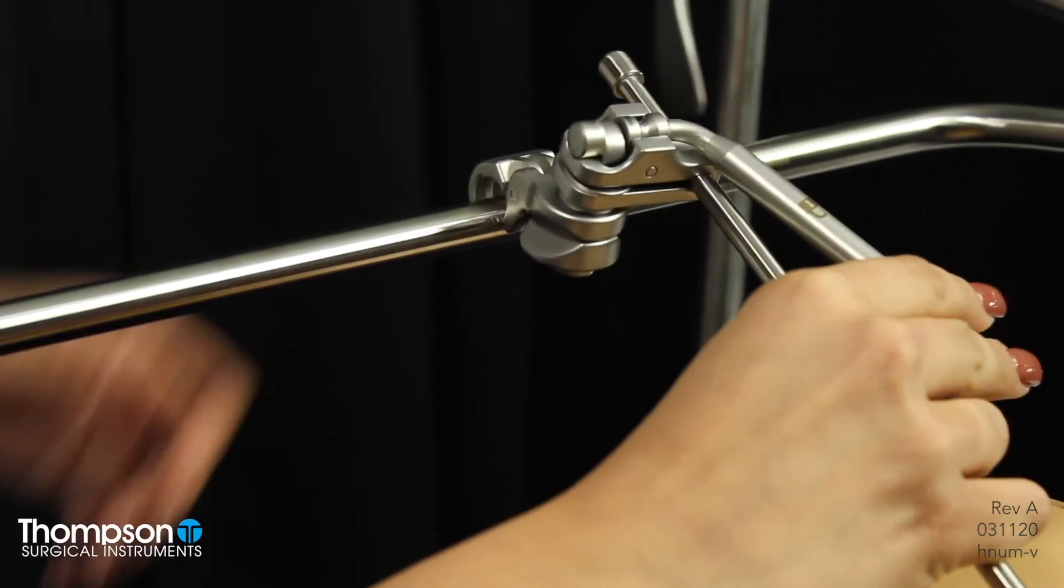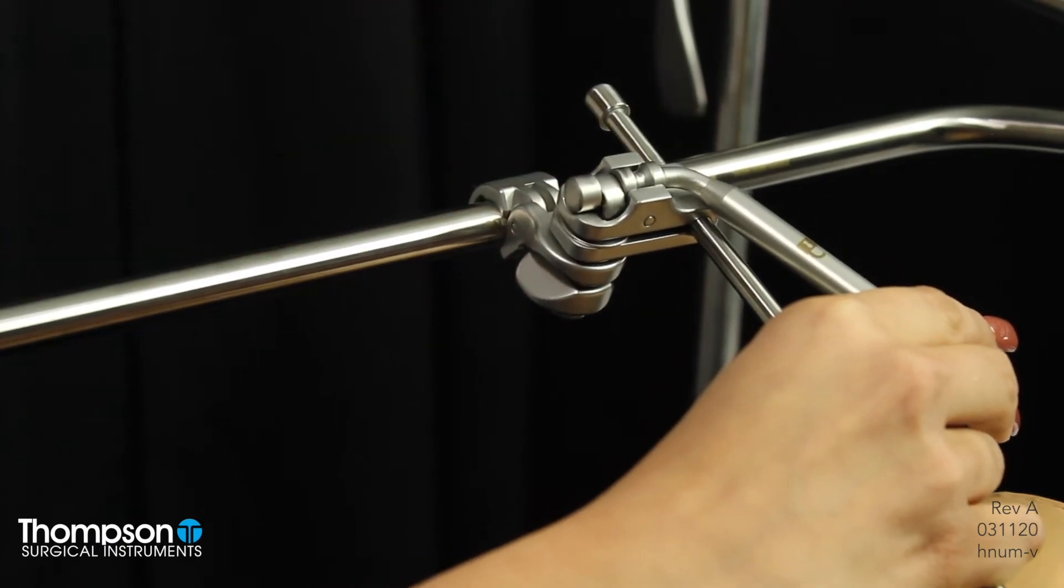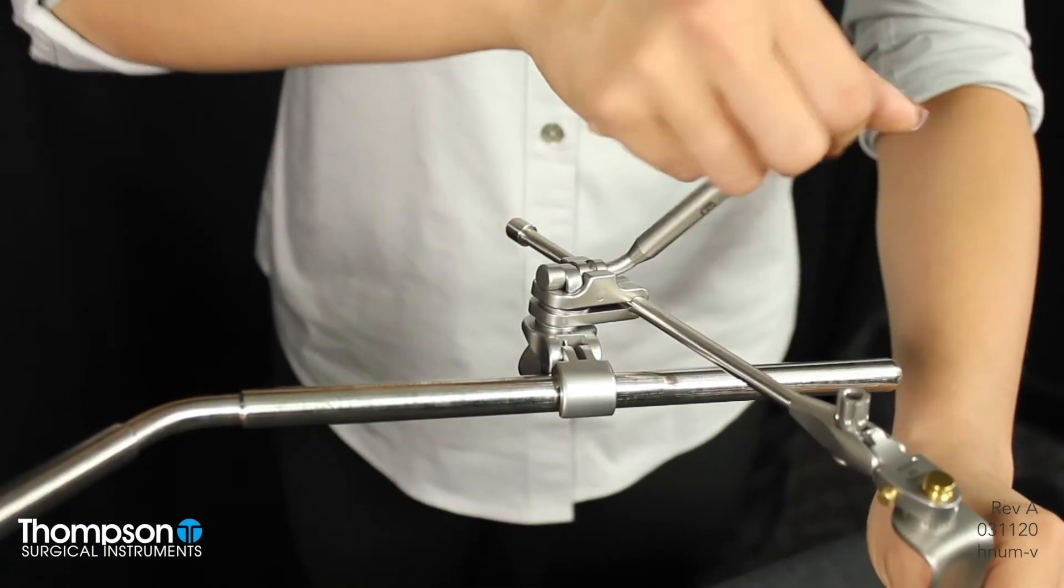With the joint in the unlocked position, clip the handle anywhere along the angled arms or crossbar. Then, flip the latch to lock.